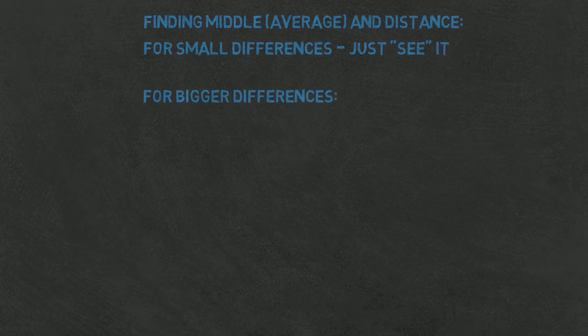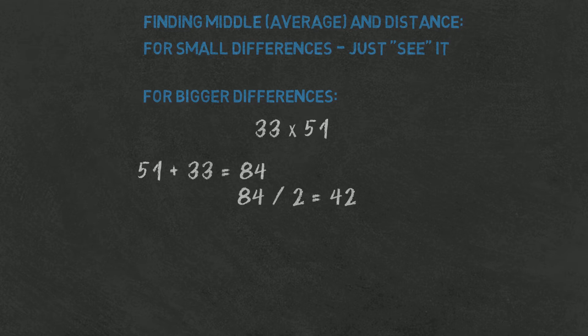If numbers are so far away that you have problems to see the middle, you can quickly calculate it just as any average. Add the numbers and divide it by 2. Sometimes it might be more convenient to find the difference between the numbers and divide that by 2. It will give you the distance to the middle first, which you can easily use to find the average. Quickly finding average of two numbers is a useful thing and I hope to post a video showing how to do it lightning fast.